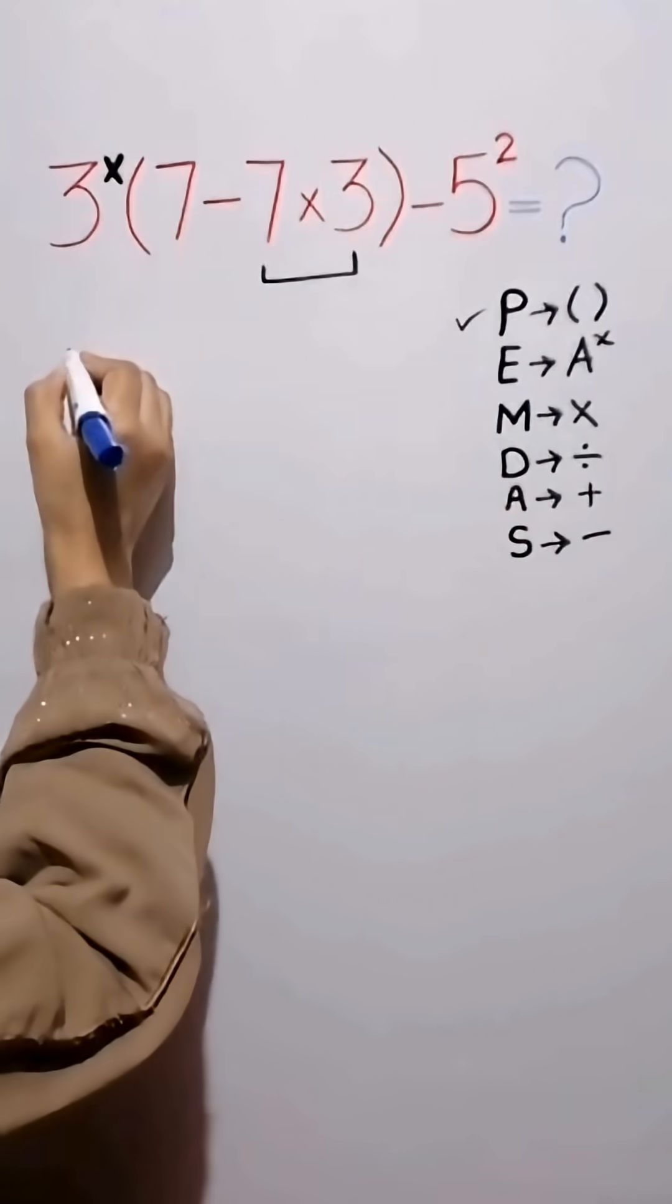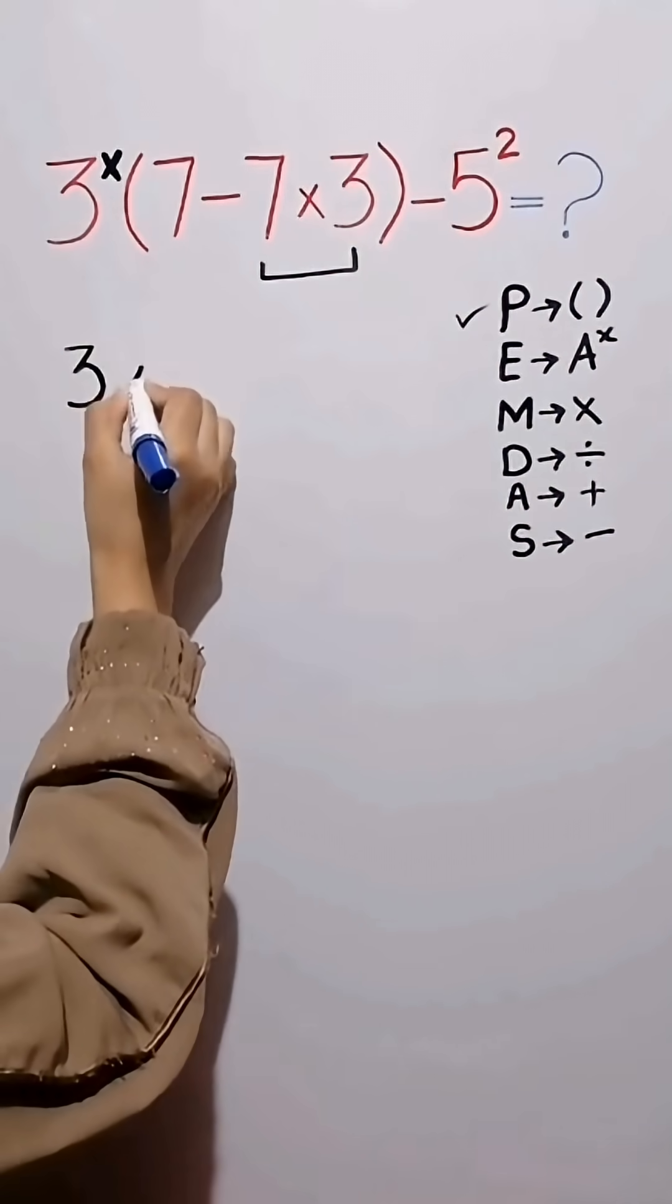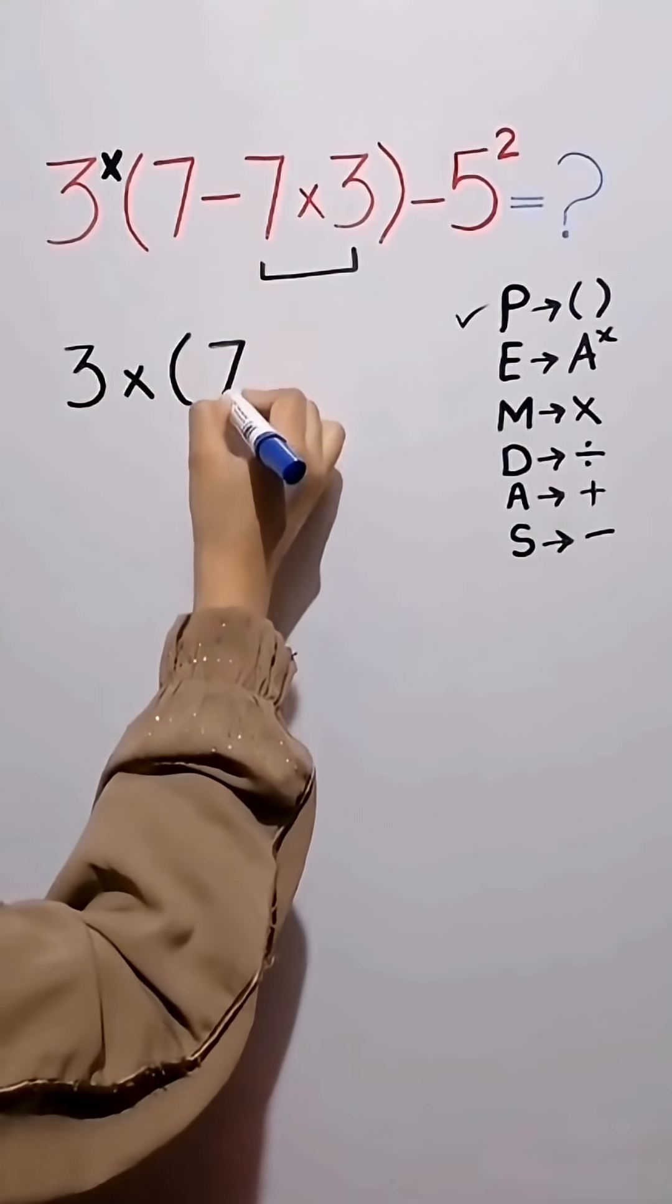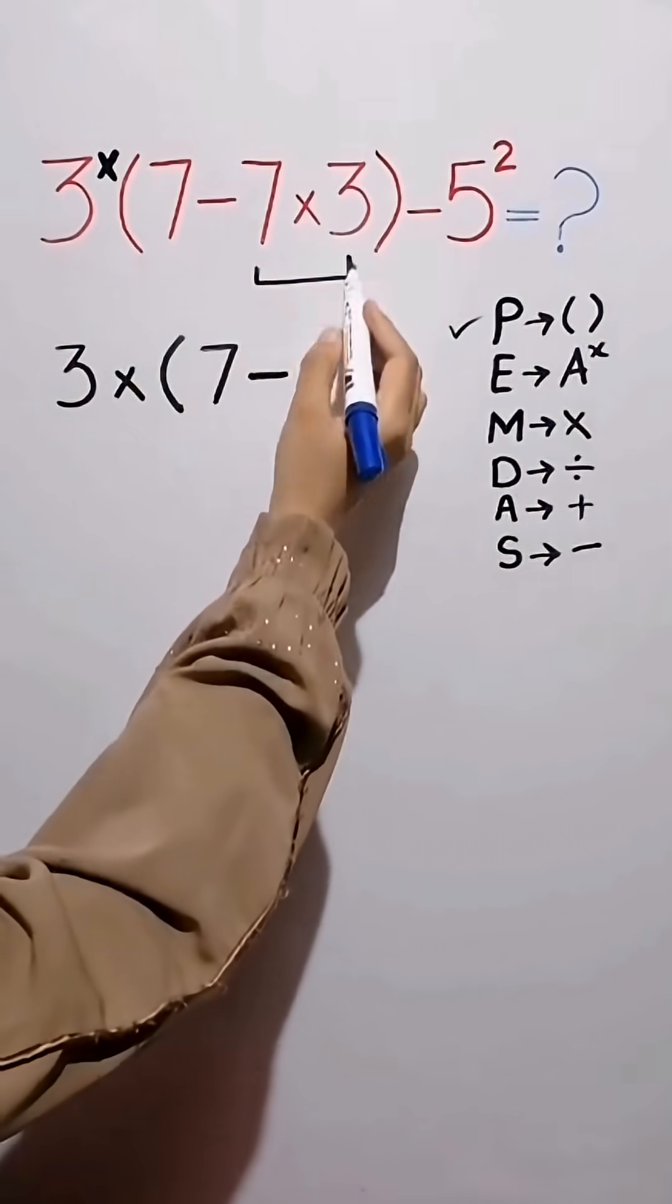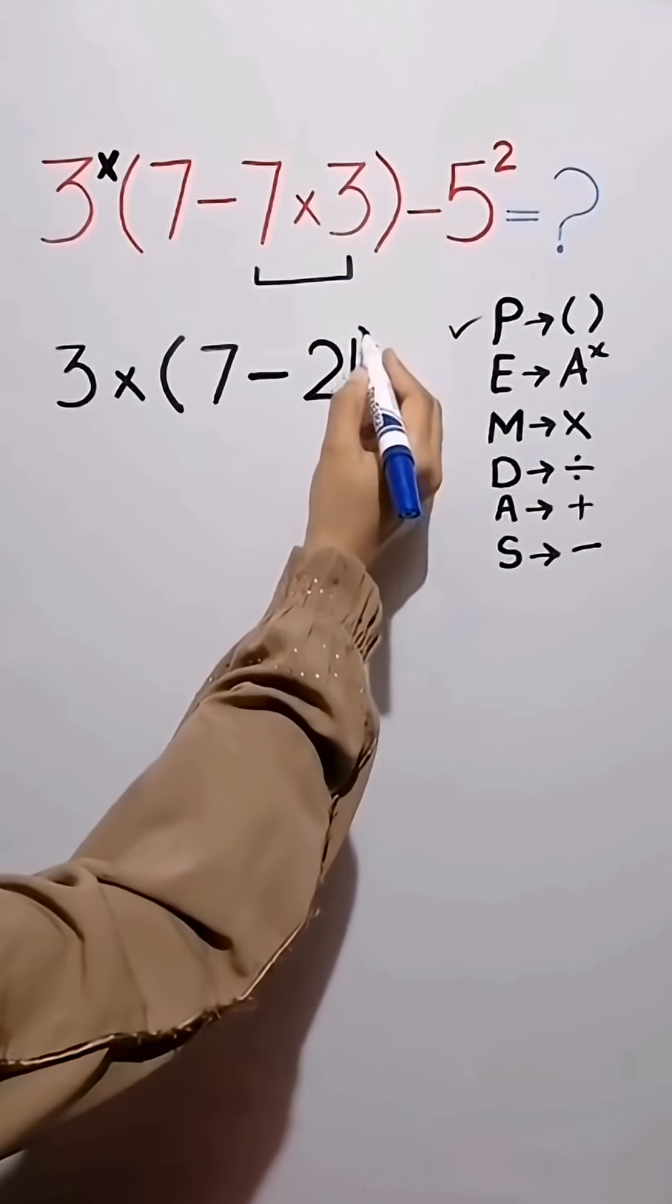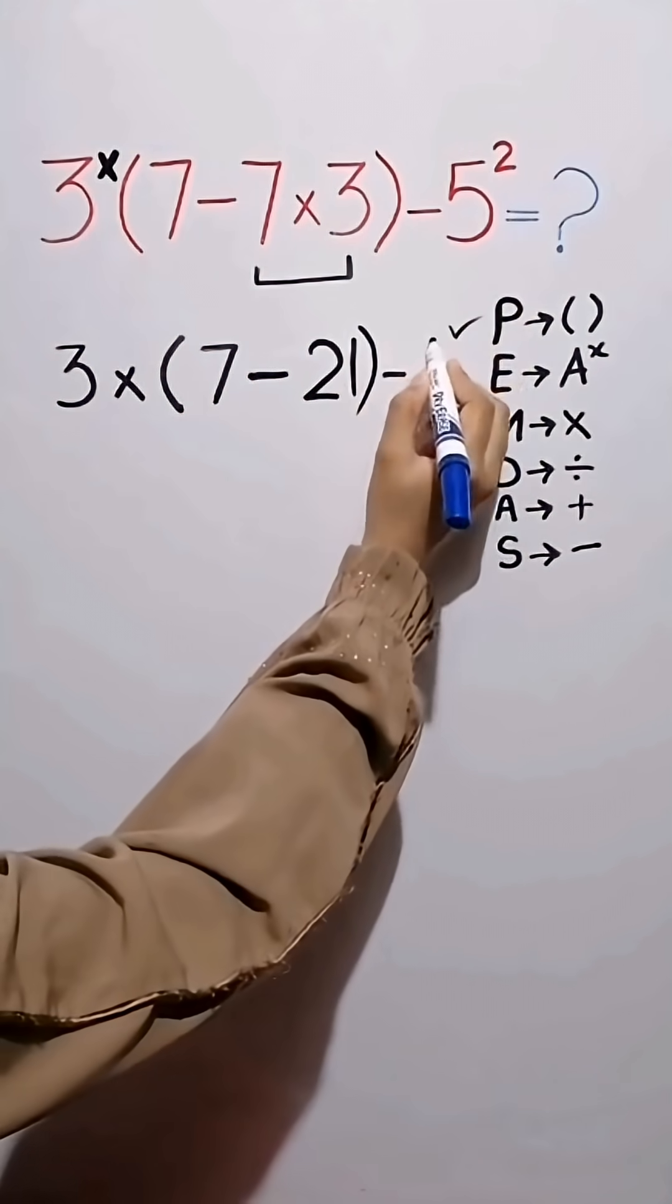Replace the original expression with 3 times open parentheses 7 minus, 7 times 3 equals 21 then close parentheses, and bring down 5 square.